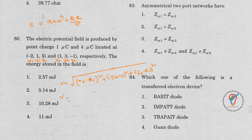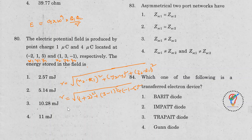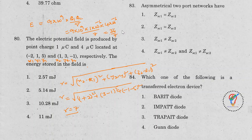Substituting: r = √((1−(−2))² + (3−1)² + (−1−5)²) = √(9 + 4 + 36) = √49 = 7. Then E = 9×10⁹ × (1×10⁻⁶) × (4×10⁻⁶) / 7 = 36/7 millijoules ≈ 5.14 millijoules.